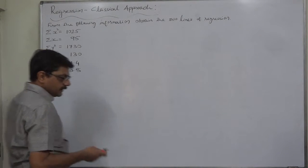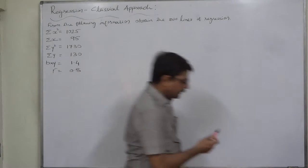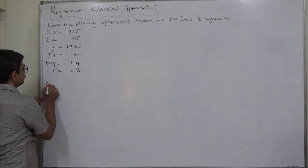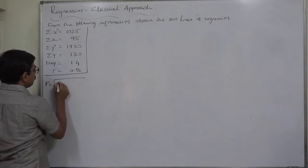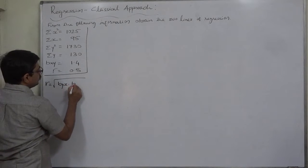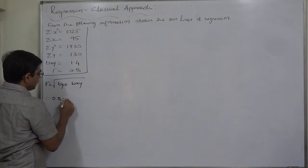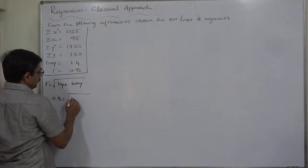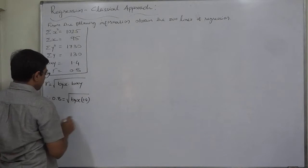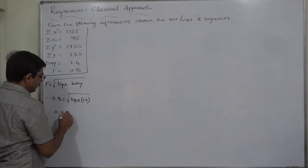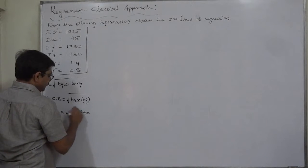The easiest way to find byx is to use bxy and the coefficient of correlation, using the relationship between the three coefficients. As we know, the coefficient of correlation equals the square root of the product of the two regression coefficients. That means 0.8 equals the square root of byx times 1.4.